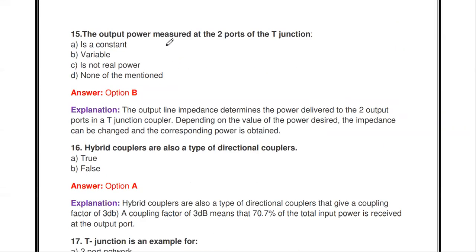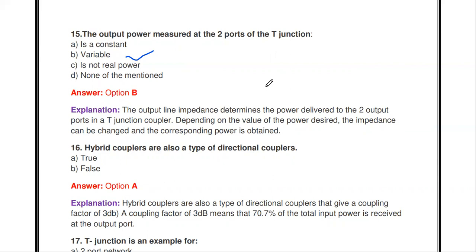Next question: the output power measured at the two ports of the T-junction is constant, variable, not real power, or none of the above? The output power measured at the two output ports of the T-junction is variable — it is not equal at both ports.